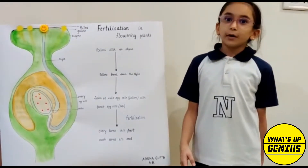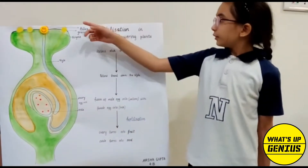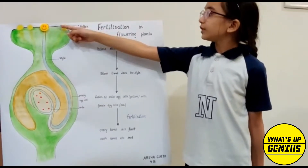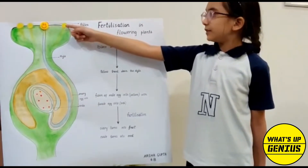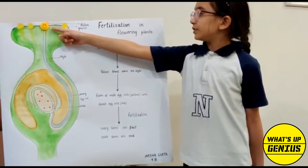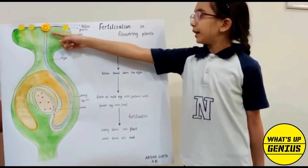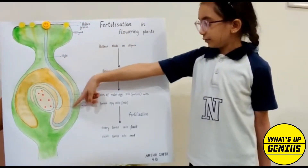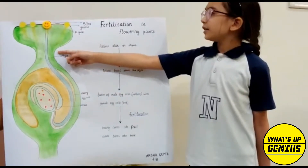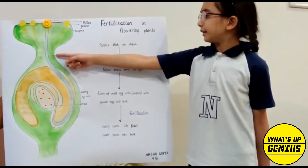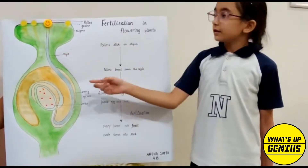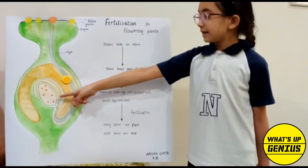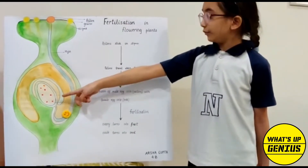After pollination, the pollen from the anther lands onto the sticky stigma. Some pollens develop a tiny tube which travels down the style into the ovary. This tiny tube contains male egg cells which travel down to female egg cells inside the ovary.